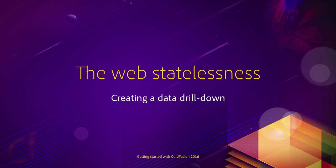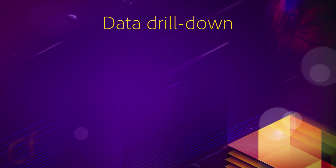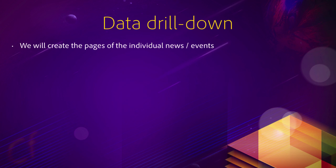This is the start of a new chapter in which you will build on the knowledge you acquired in the previous chapter to create a data drilldown. In this chapter we will create the pages of the individual news and events. So far you have a list of news and a list of upcoming events, but you also have those read more links, and when you click on a read more link you want to see a specific news or a specific event.